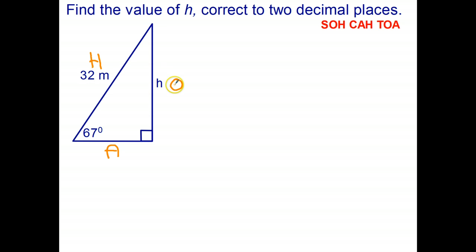So I need the trig ratio that uses the opposite and adjacent. Now if I look at my SOH CAH TOA that's going to be the sine. So we know that the sine of the angle is opposite over hypotenuse, and the angle that we're interested in is 67 degrees and the opposite side is the unknown h and the hypotenuse is 32. So that's where we're up to.